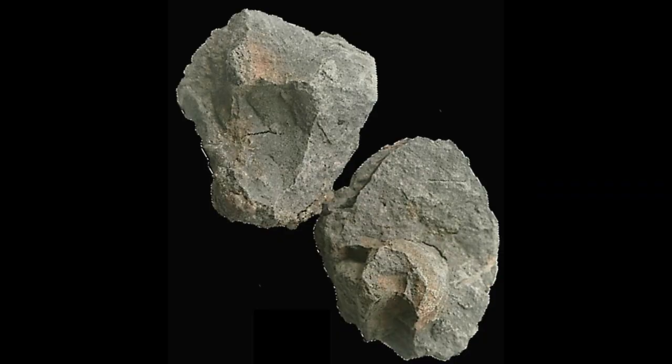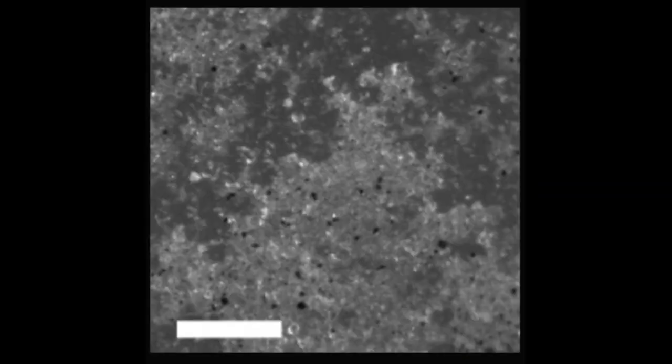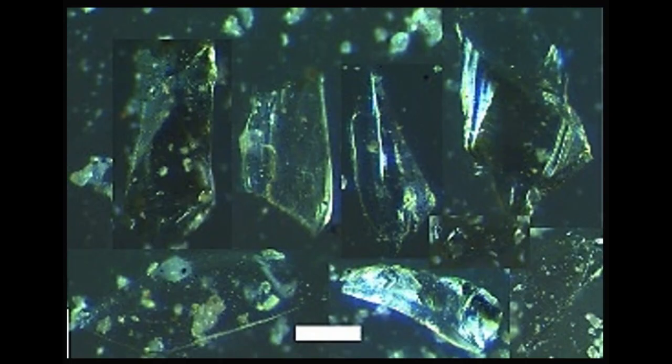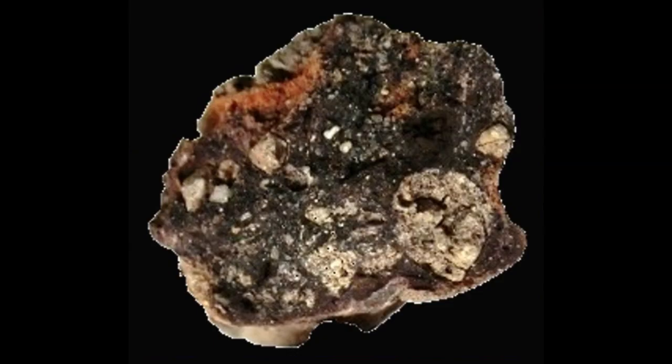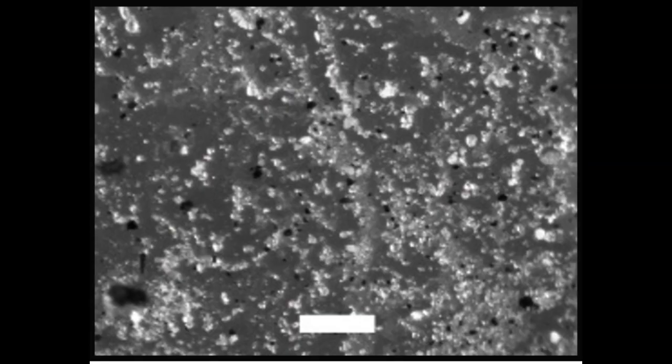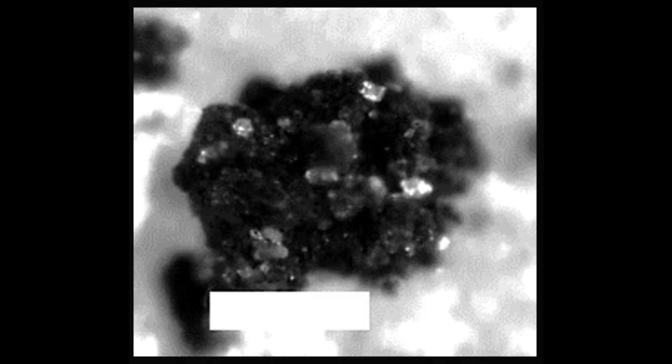A comminuted quartz accretion from Ban the Chang contains glass shards, mini tektites, carbonized wood, and iron spheres with silt-sized quartz grains. An iron accretion from Ban the Chang also contains comminuted quartz grains and iron spheres with silt-sized quartz grains included.